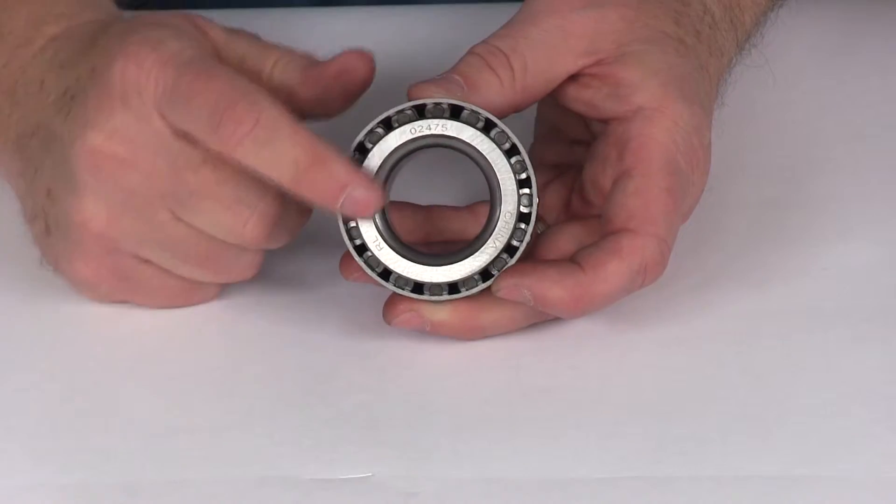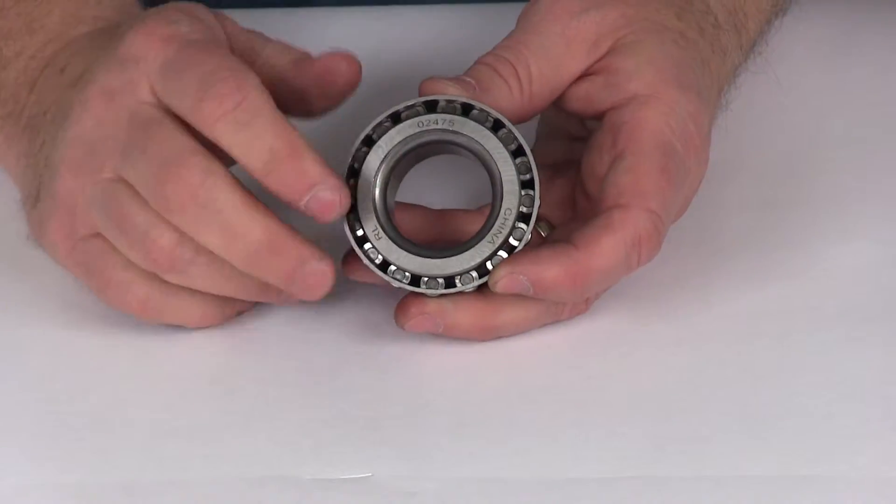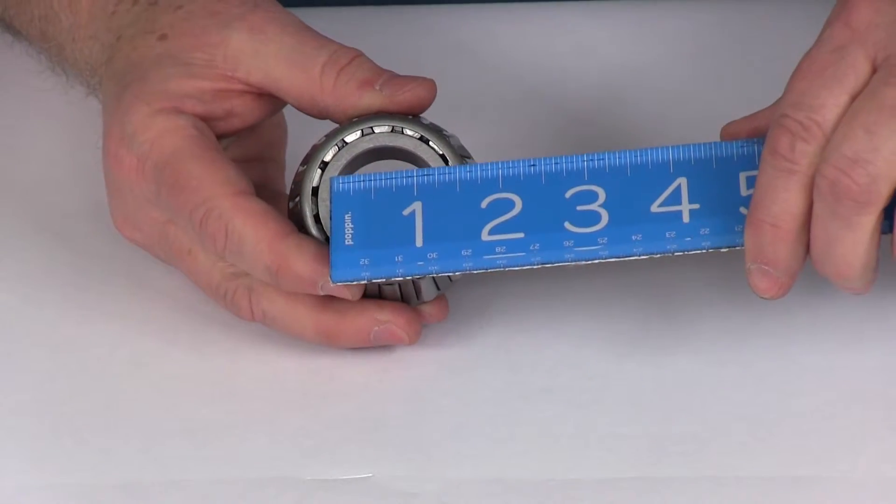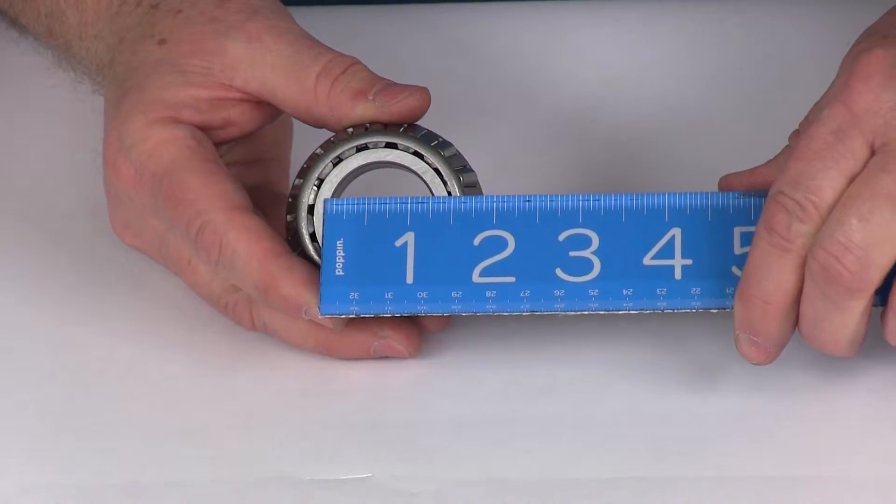The inner diameter of the bearing is listed to help you choose the correct bearing for your spindle. The inner diameter on this one is going to be right at 1.25 inches.